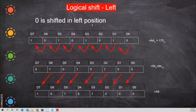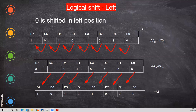Now we'll see with an example — logical shift left. A zero is shifted into the leftmost position. Here you are going to shift left. The last zero will be added. This bit will be shifted, and so on. This one will be gone — you lose that value. When this is shifted, what will happen to D0? It will be introduced as zero.